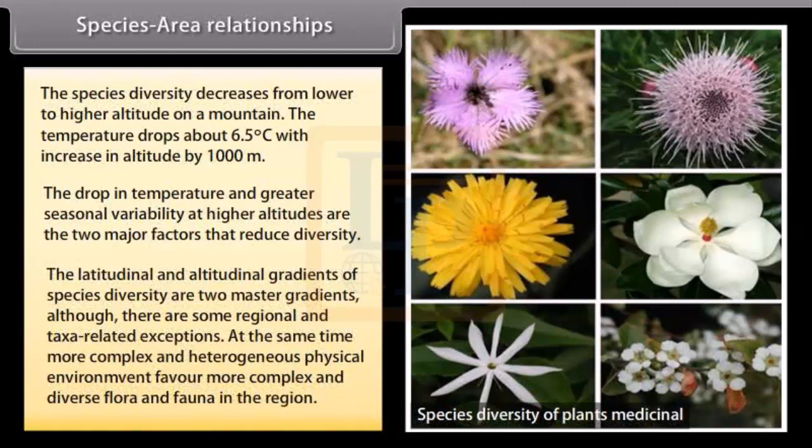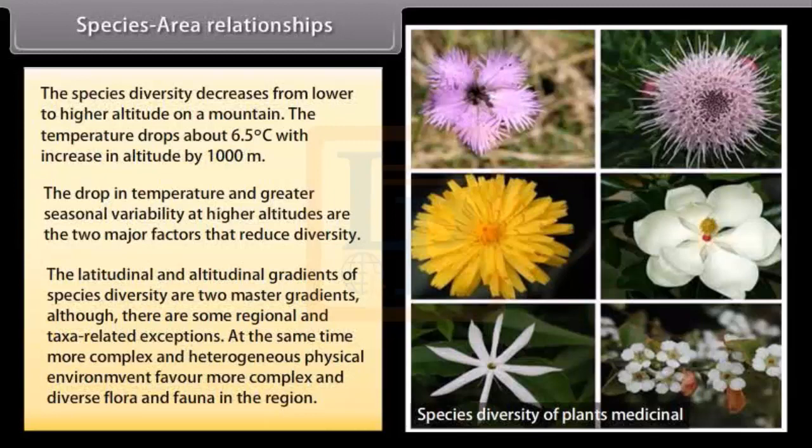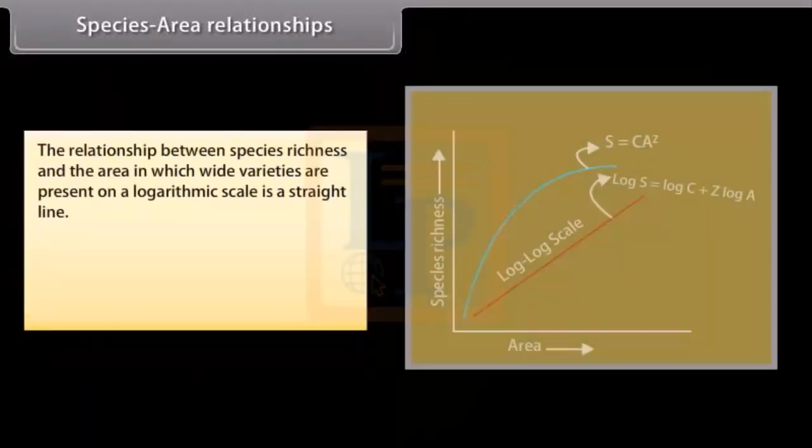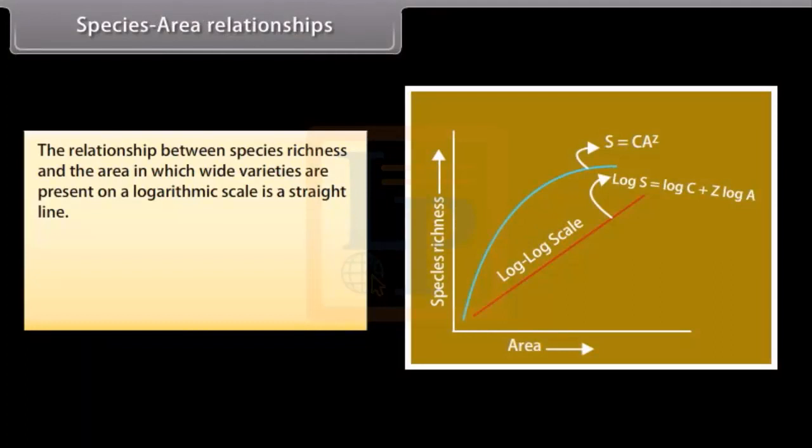The latitudinal and altitudinal gradients of species diversity are two master gradients, although there are some regional and taxa-related exceptions. At the same time, more complex and heterogeneous physical environment favor more complex and diverse flora and fauna in the region. The relationship between species richness and the area in which wide varieties are present on a logarithmic scale is a straight line given below. Log s is equal to log c plus z log a. Z is slope of the line. C is y-intercept.